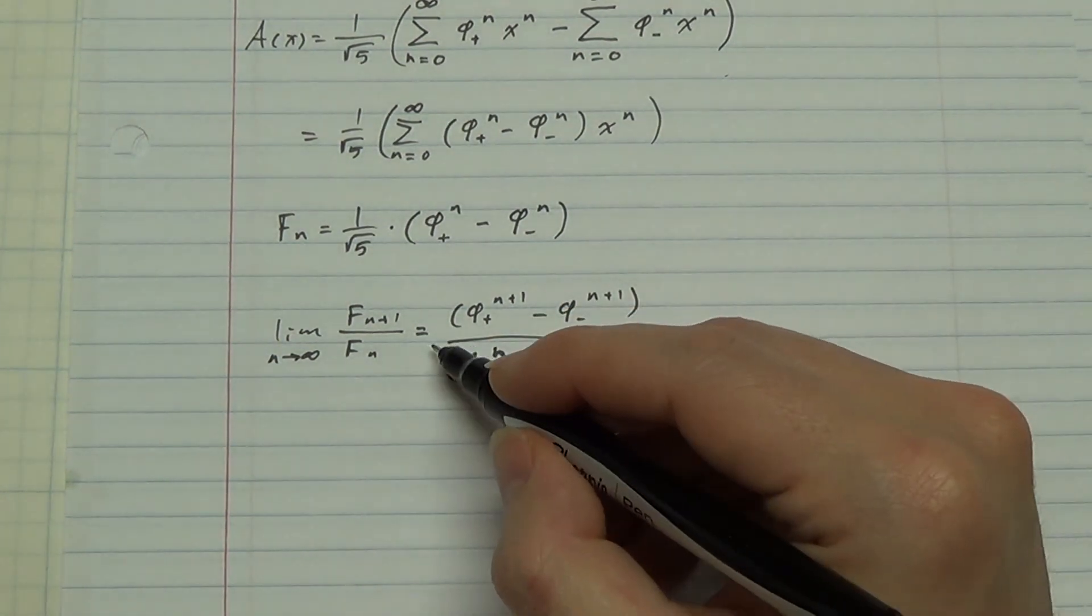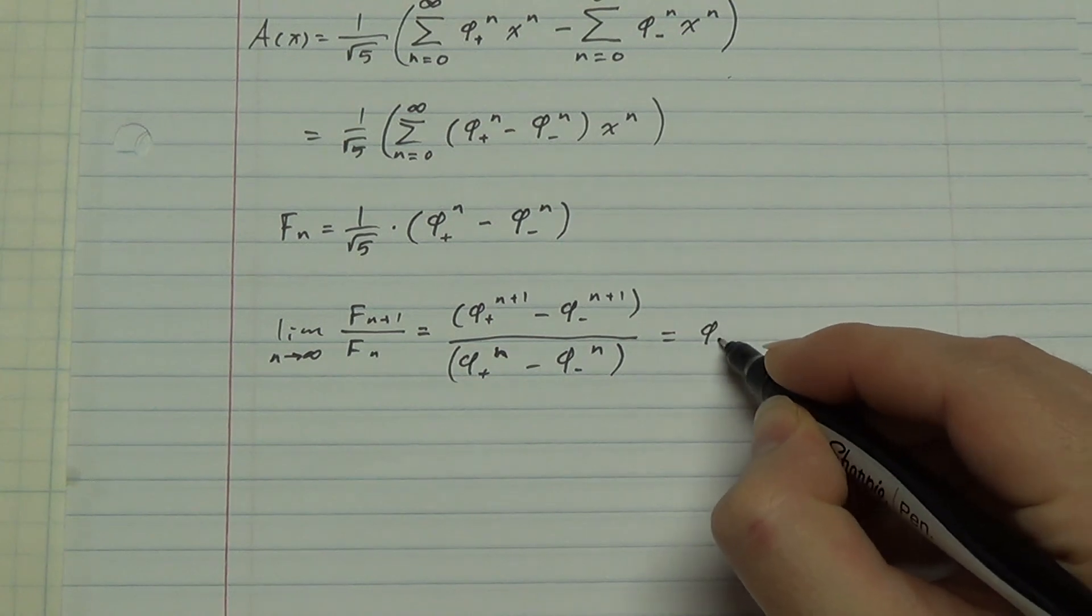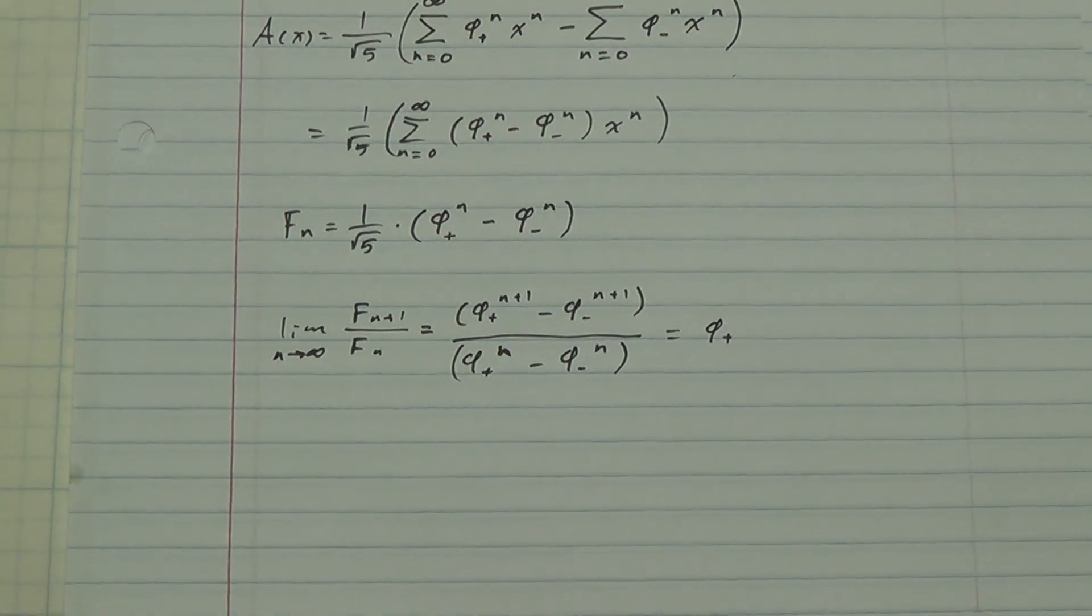And so the limit is phi plus, the golden ratio.